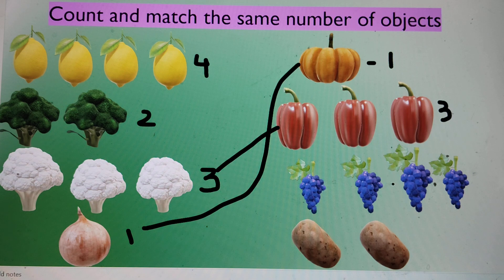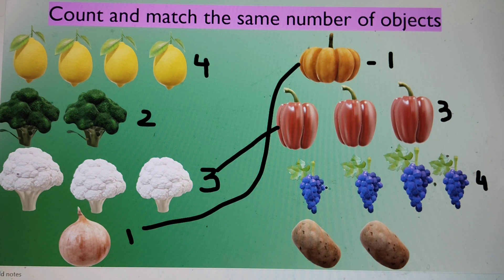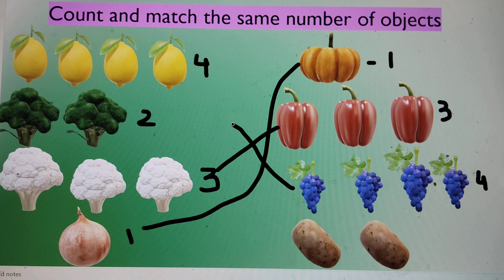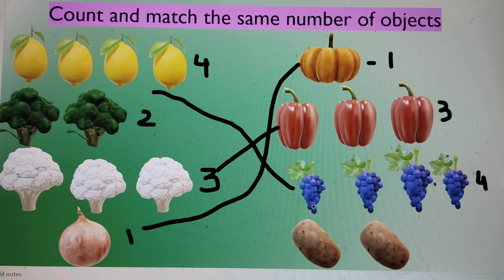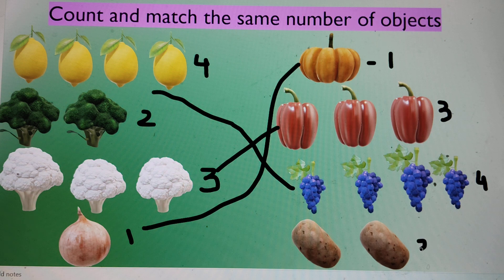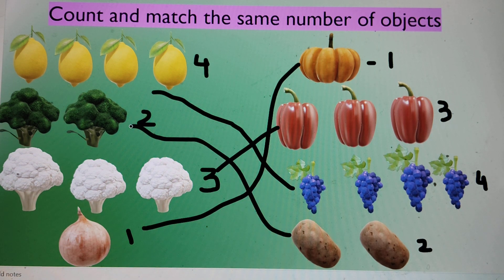One, two, three, four. Four grapes. We will match these grapes with lemons. And last two. Two potatoes. We will match them with broccoli.